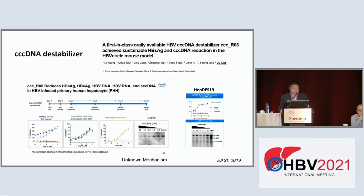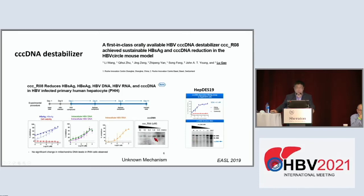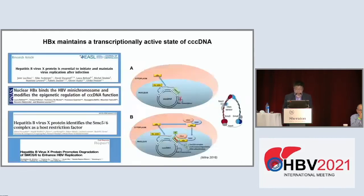We don't yet have a really good cccDNA destabilizer. A study reported by a Roche group at the EASL meeting in 2019 used primary human hepatocytes to screen a library and found a compound called CCCR08 that can destabilize cccDNA. Although the potency is not yet optimal, it demonstrates the hope that a compound can cause degradation of cccDNA. The mechanism is not yet known, and we hope this group will publish their data to allow the field to further develop this strategy.